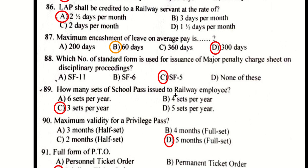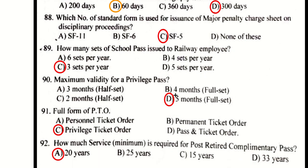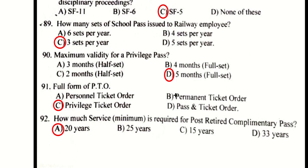The standard form number used for issuance of a major penalty charge sheet in disciplinary proceedings is SF-5. How many sets of school passes are issued to railway employees? That is three sets per year.